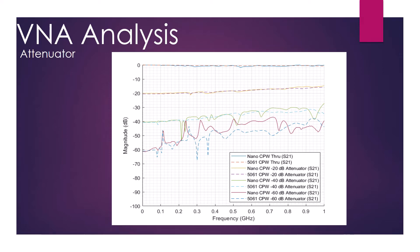The Nano is able to achieve similar accuracy to the Keysight. However, at negative 40 dB, the Nano shows more ripples, meaning we are approaching the dynamic range of the Nano.